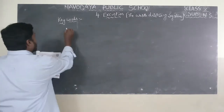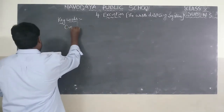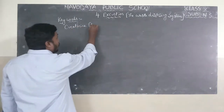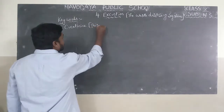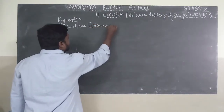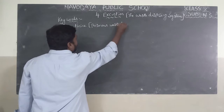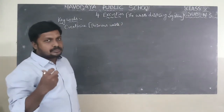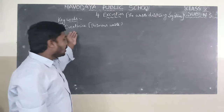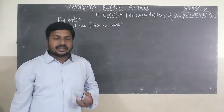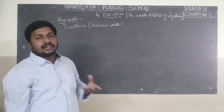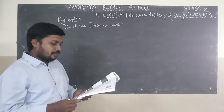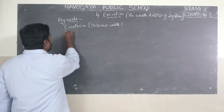The first keyword is creatinine. Creatinine is the poisonous waste present in urine. When kidneys filter the blood, waste materials like creatinine, urea, uric acid, and ammonia all come out from the body through urine.